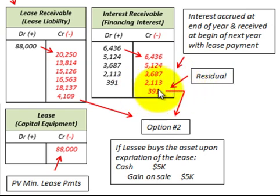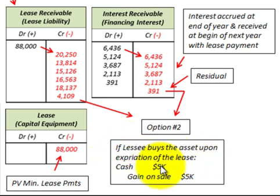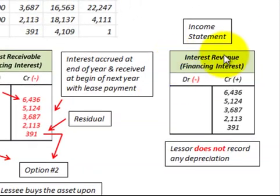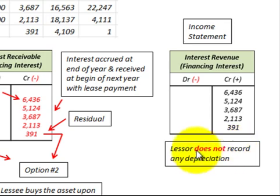If instead of a residual value the lessee had a purchase option and buys the asset at lease expiration for $5,000, the lessor would debit cash for $5,000 and recognize a gain on sale of $5,000. On the income statement, the lessor recognizes interest revenue — the financing interest on the lease — credited each year. Importantly, the lessor does not record any depreciation for a direct financing lease.